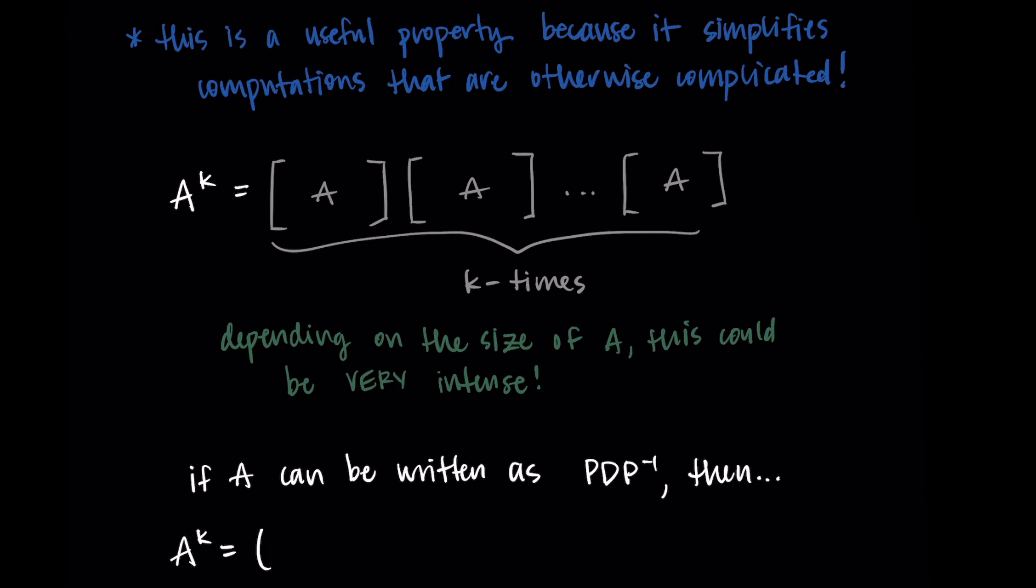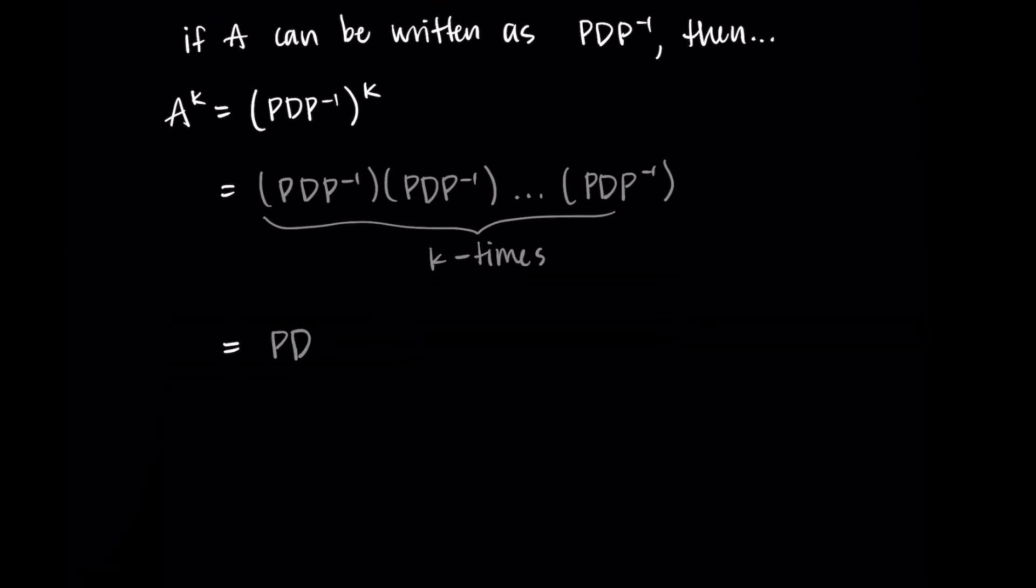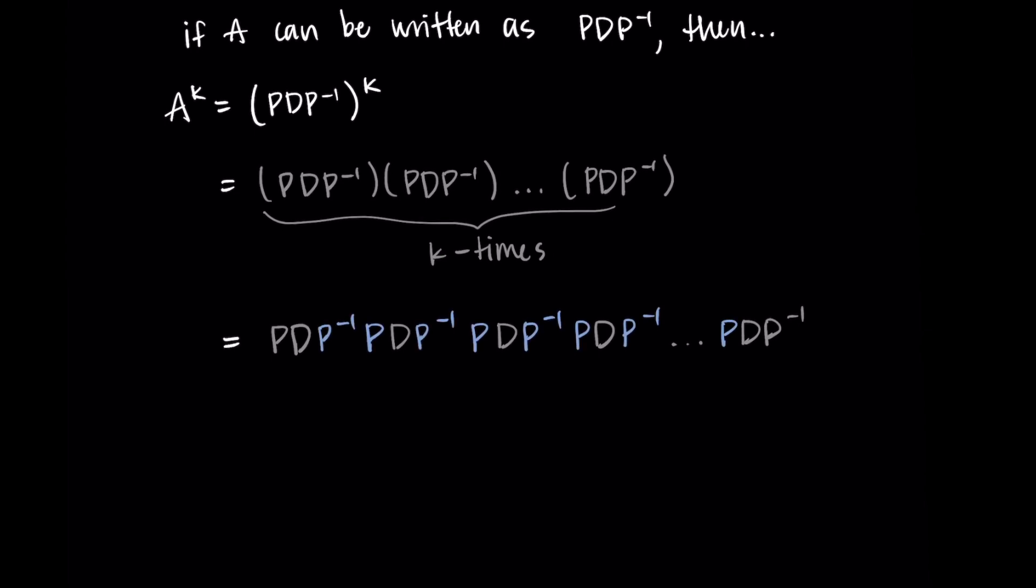If we look at A to the kth power and we replace A with PDP inverse, then we can simplify this by writing out PDP inverse being multiplied by itself k times. When we take away the parentheses and each of these PDP inverses match up, we have a P inverse P. This P inverse P that repeats itself throughout this multiplication is going to go away because a matrix times its inverse is just the identity matrix.